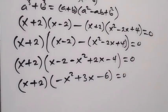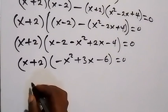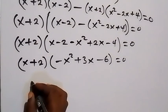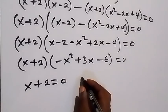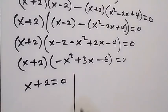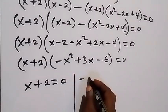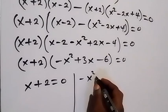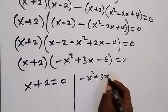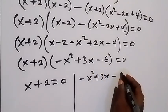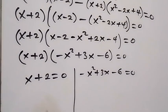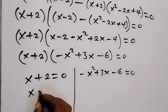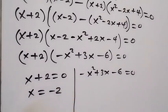Now we have two possible cases. The first is x + 2 equals zero, and the second is minus x squared plus 3x minus 6 equals zero. From the first case, we take 2 to the other side and get x equals minus 2. This is one value of x.